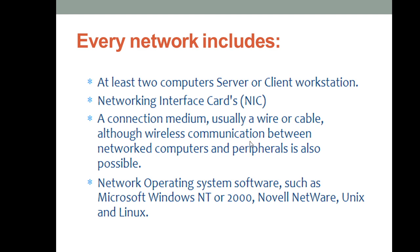Communication can be Wi-Fi between the networked computers as well as peripherals. These are the things which should be within your computer network, or to get access to the computer network you should have these things. You can access a wired network or a Wi-Fi network, and you should have a network interface card in your computer system. At least two or more computers should be there within a network so that communication can be done between the computers.